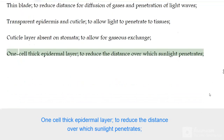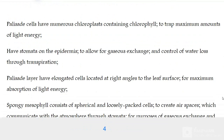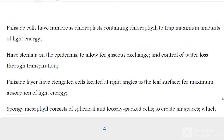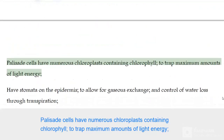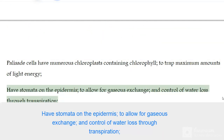One cell thick epidermal layer to reduce the distance over which sunlight penetrates. Palisade cells have numerous chloroplasts containing chlorophyll to trap maximum amounts of light energy. They have stomata on the epidermis to allow for gaseous exchange and control of water loss through transpiration.